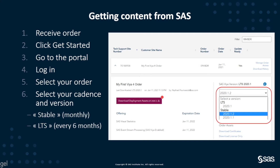Before you click the download deployment asset button, you need to select a cadence and a version in the drop-down menu. You have two cadences to choose between: the stable cadence, which is a monthly update cycle, or the LTS cadence, where you get a new version of the software every six months.